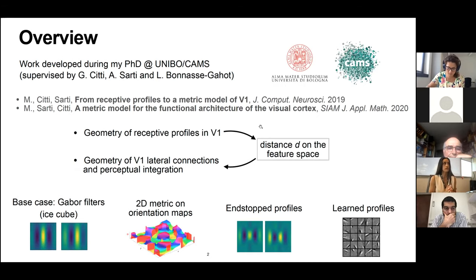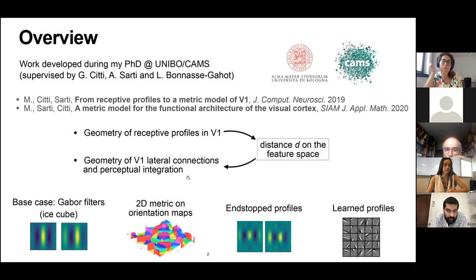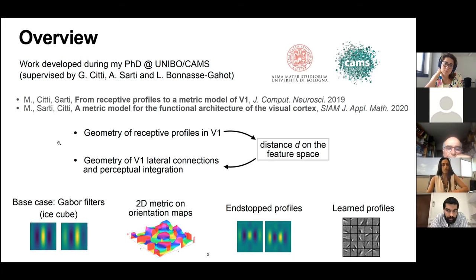We focus on modeling the functional architecture of V1, the primary visual cortex. The idea was to find an explicit link between the geometry of the feedforward connections entering V1 and the geometry of the lateral connections happening within this area. Specifically, we characterize the interactions between units in V1 in terms of a distance defined on a space of features, induced by the receptive profiles of the cells. Given any family of receptive profiles, we want to develop a method to compute the connectivity pattern associated with them.